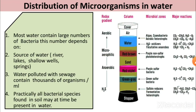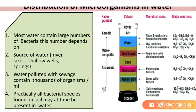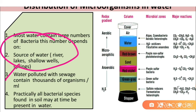Next is the distribution of microorganisms in water. Most water contains a large number of bacteria, and this number depends on the source of water. Water polluted with sewage contains thousands of microorganisms, and practically all bacterial species found in soil may also be present in water.